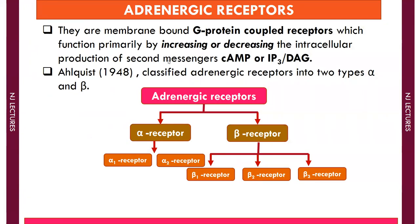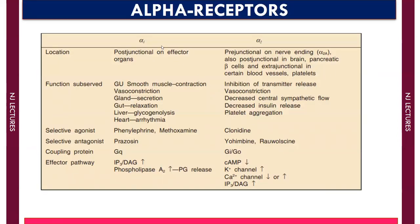Next, we will study adrenergic receptors. Adrenergic receptors are membrane-bound G-protein coupled receptors whose main function is to increase or decrease intracellular production of secondary messengers like cyclic AMP, or IP3 and DAG. Adrenergic receptors were classified by Alquist in 1948 into alpha receptors and beta receptors. Alpha receptors are further classified into alpha-1 and alpha-2, and beta receptors into beta-1, beta-2, and beta-3.